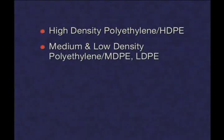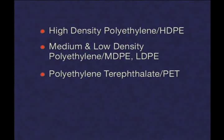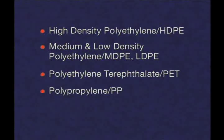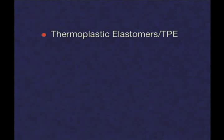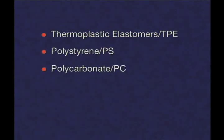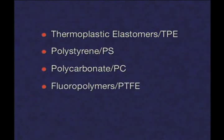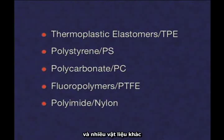Blow molded products are formed from thermoplastic resins such as high-density polyethylene, medium and low-density polyethylene, polyethylene terephthalate, polypropylene, polyvinyl chloride, thermoplastic elastomers, polystyrene, polycarbonate, fluoropolymers, polyimide, and many other materials.